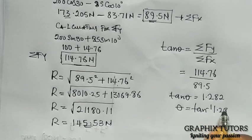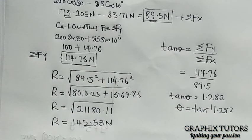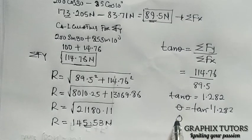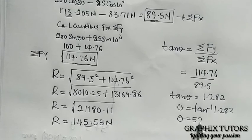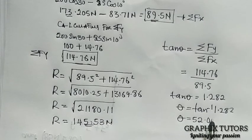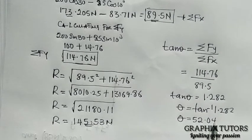So my theta will become tan inverse of 1.282, which gives me theta to be 52.04 degree.